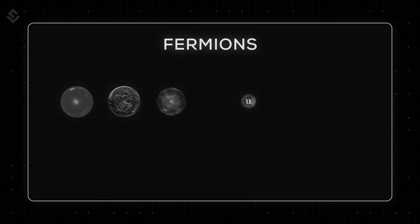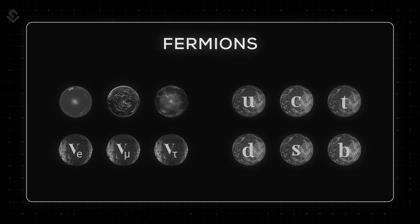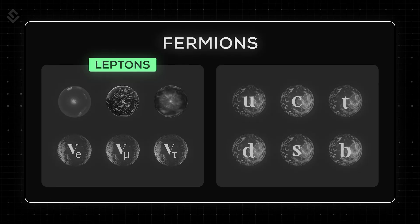The standard model has 12 fermions, and fermions are of two types: leptons and quarks.